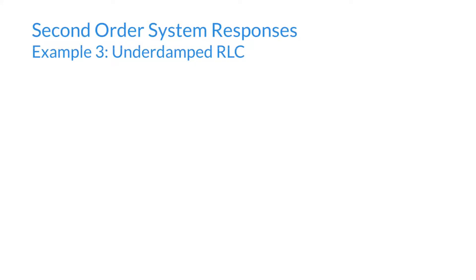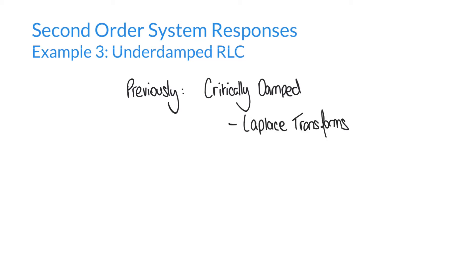Hello and welcome to this third example of finding second-order system responses in RLC circuits. In our previous examples, we looked at examples of critically damped circuits, and we did that using two different methods. We used Laplace transforms in the first instance, but then we also showed equivalent results using root-finding methods. We're going to use root-finding methods again in this example, but this time we're looking at an under-damped RLC circuit.